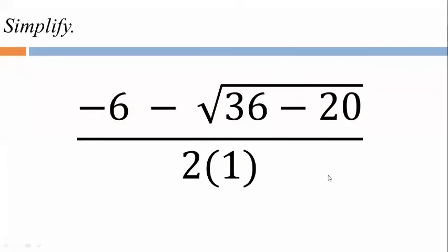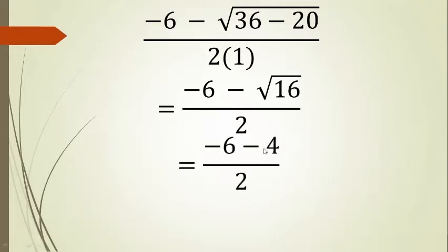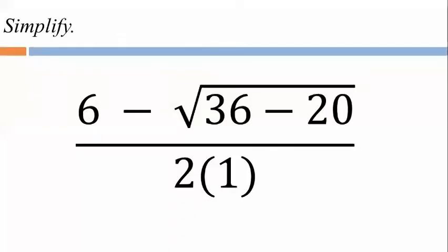Next: (negative 6 minus square root of (36 minus 20)) divided by (2 times 1). First subtract 36 and 20 to get 16, then take the square root of 16, which is 4. Negative 6 minus 4 divided by 2 gives negative 10 divided by 2, which is negative 5.